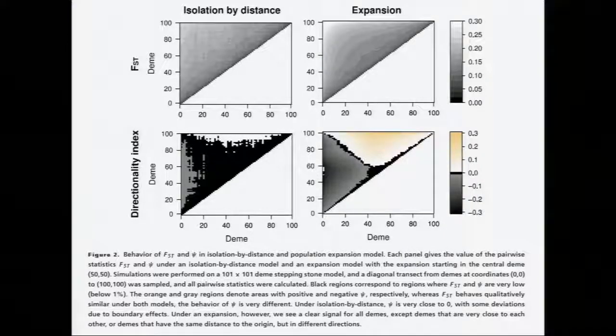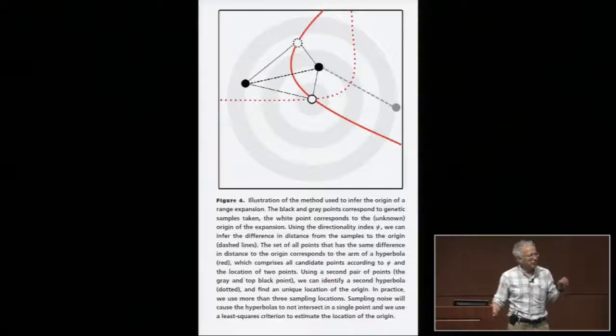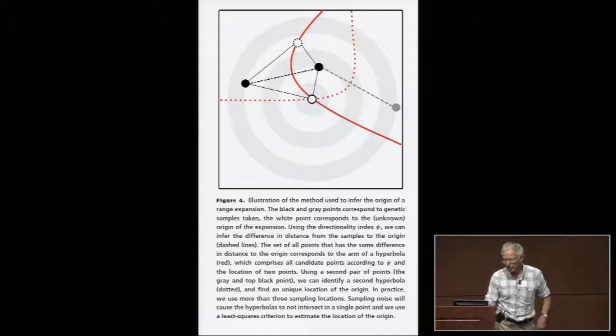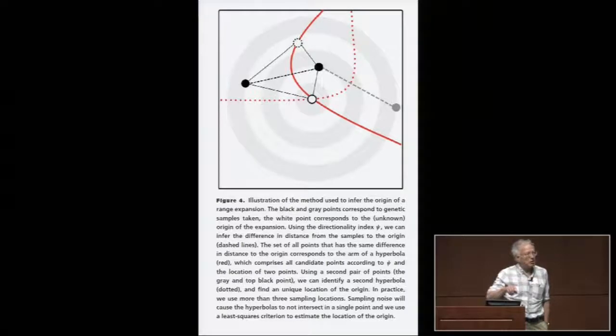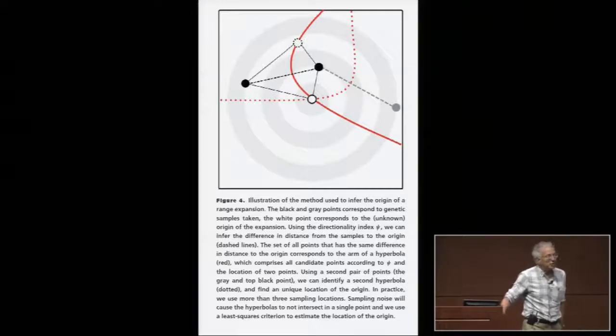If you use the directionality index, you get very small values except for a slight edge effect. But when you have a range expansion, you get a very strong signal of the range expansion. We'll forget this completely. This allows you to locate the origin of the range expansion by using the theory called the time distance of arrival. This is the same theory that engineers use to track cell phones and other moving objects. When you compute the index between two locations, it maps out a hyperbola of equal values. And then you do two more locations, and you map out another hyperbola of equal values. And when those hyperbole cross, that's your origin.